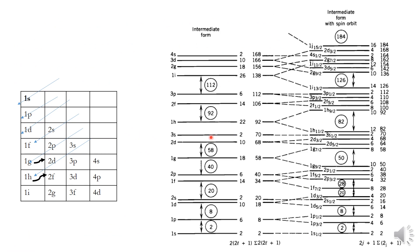Due to the spin-orbit coupling, the p, d, and f levels are each split into two. For the s state (l = 0), there is no splitting, so there is only one 1s₁/₂ level. The p level splits into 1p₃/₂ (higher angular momentum, going downward) and 1p₁/₂ (going upward). Similarly, d splits into d₅/₂ and d₃/₂.